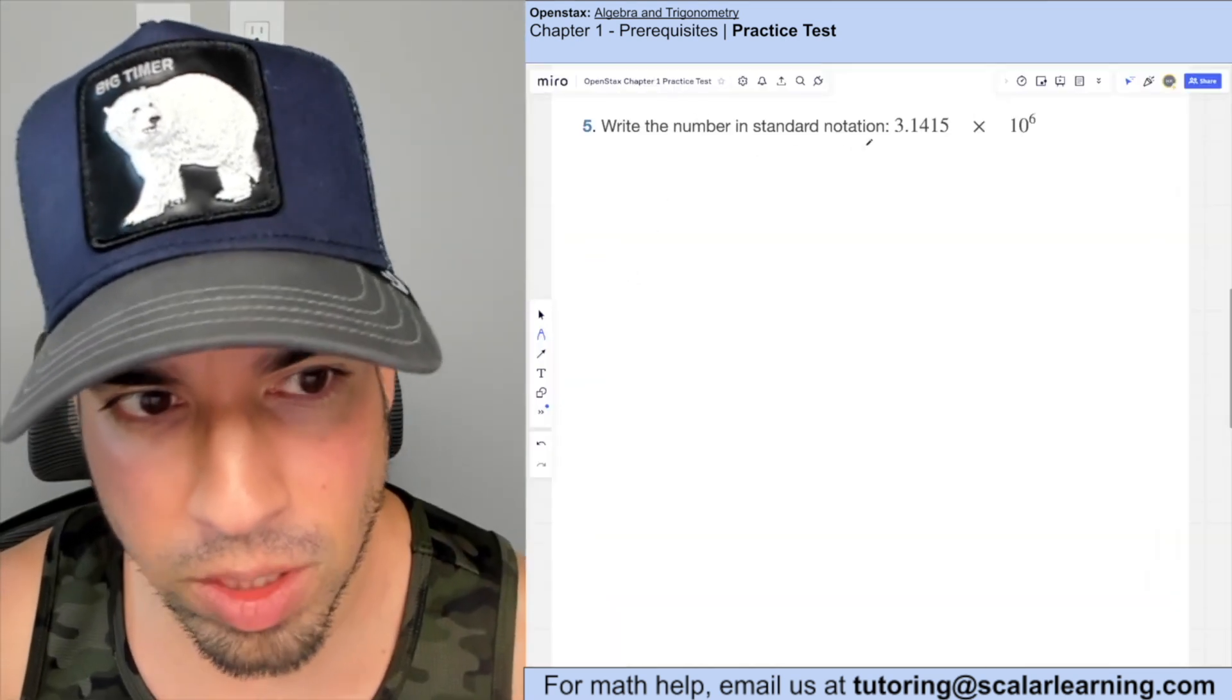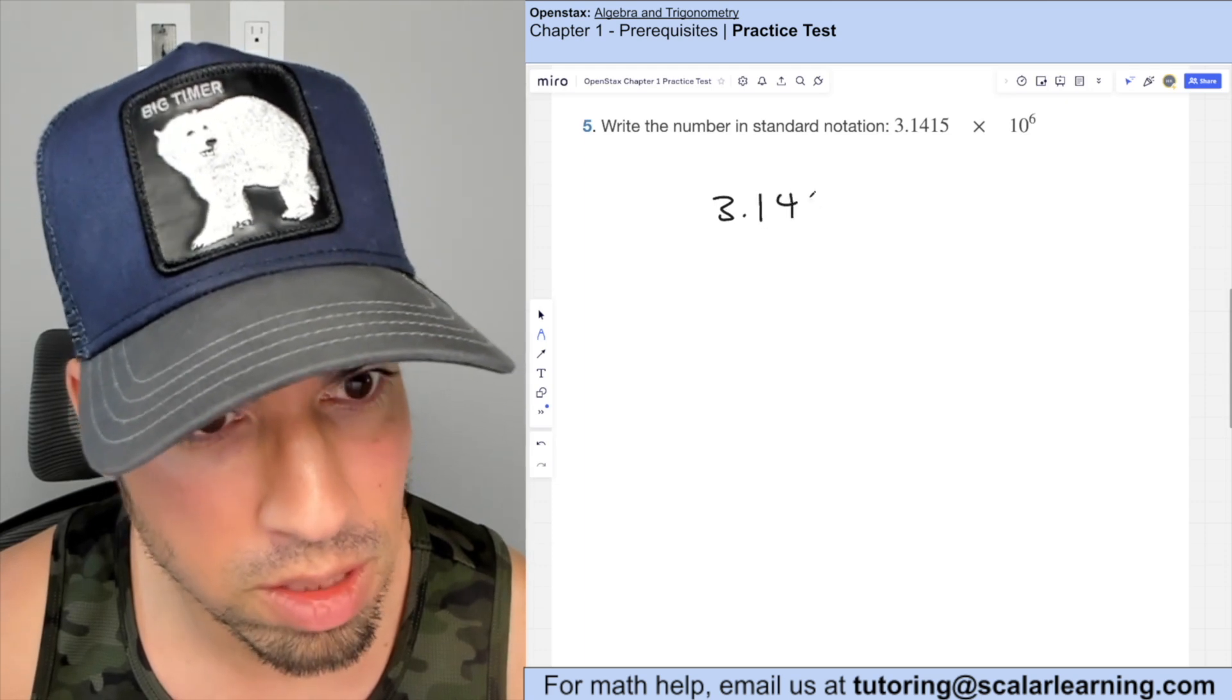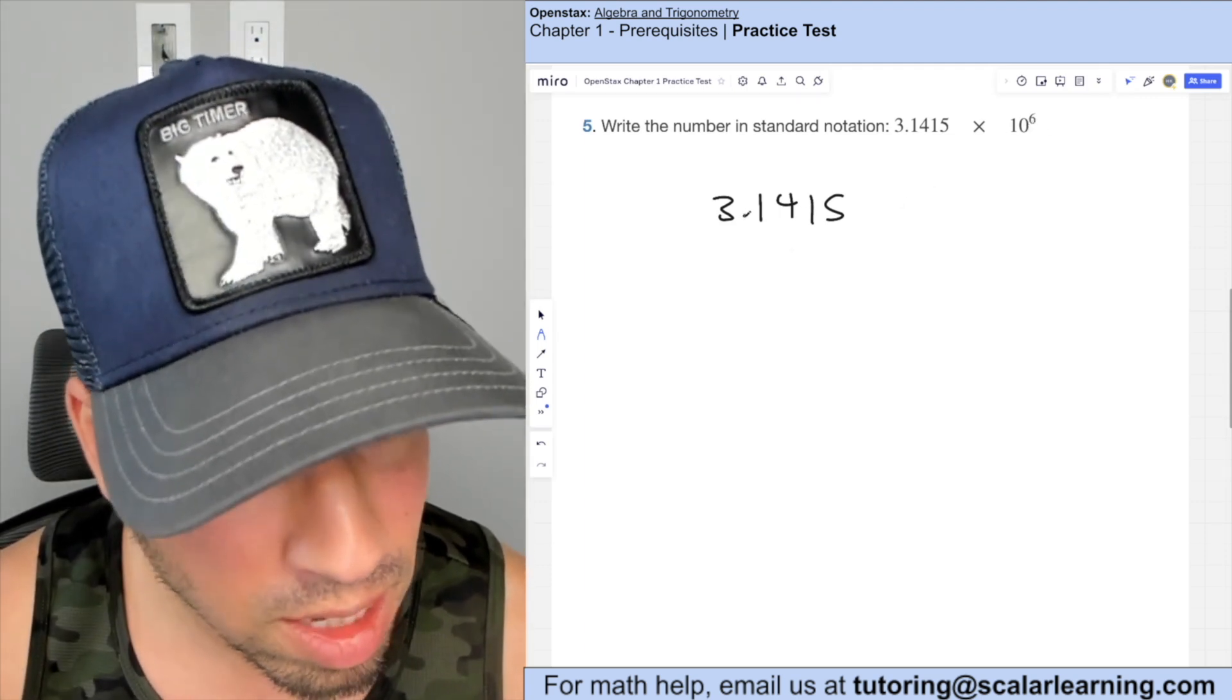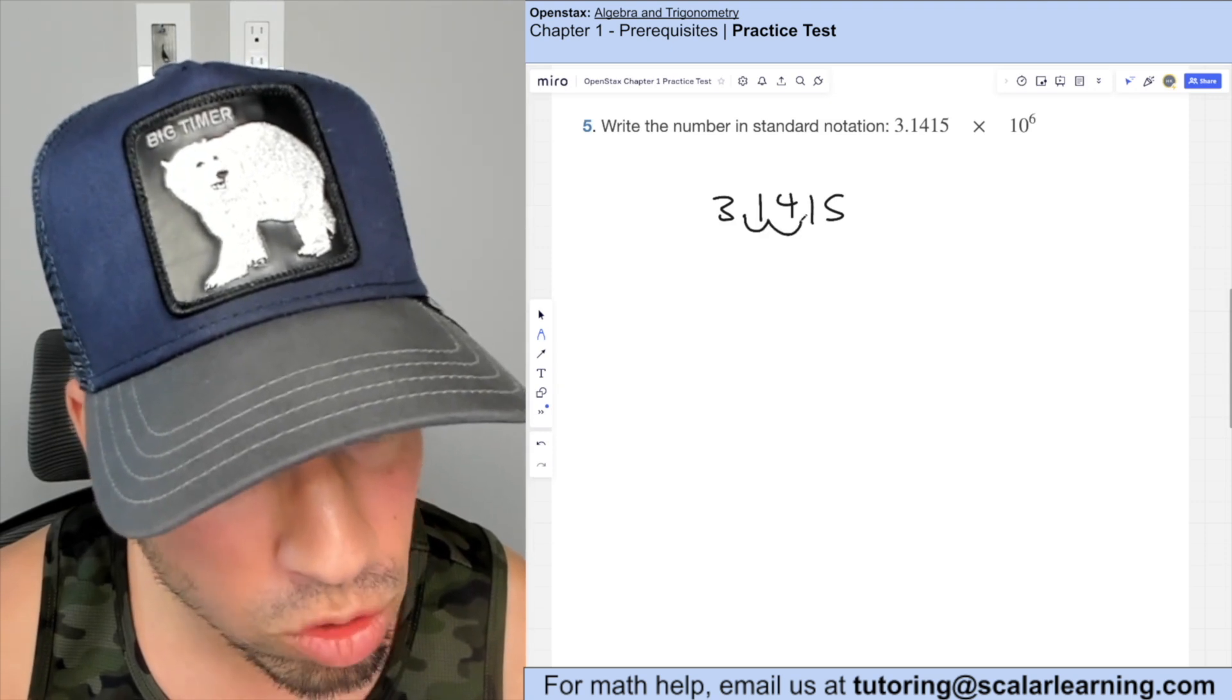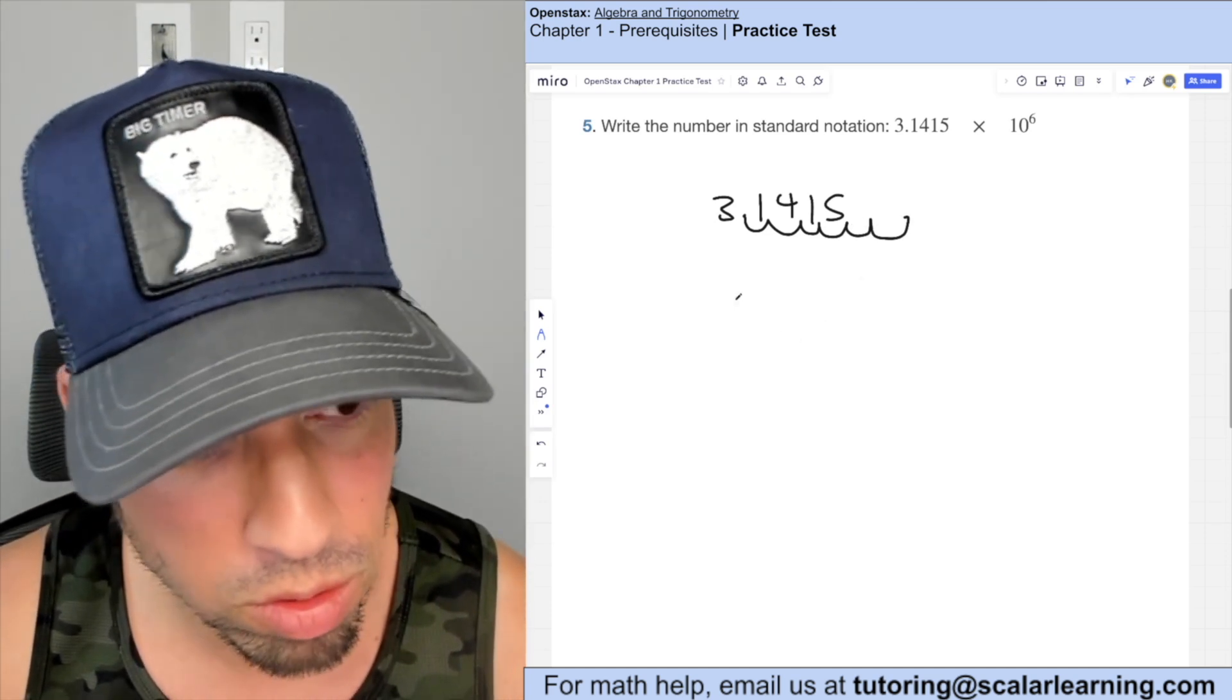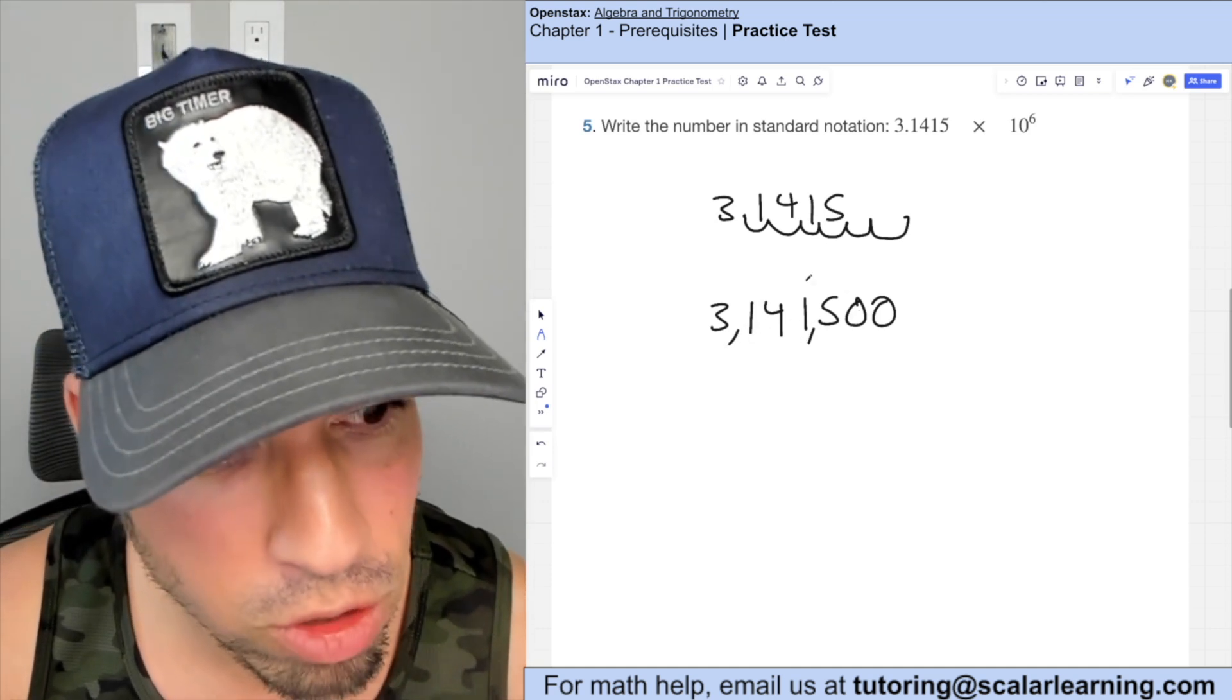This is currently in scientific notation. We want to put it in standard notation. So the process is as follows. So I've got 10 to the sixth power to put it back. This is a positive exponent. I take my decimal and I move it six spots to the right. So one, two, three, four, five, six, and these two empty spots gets filled with zeros. So my final answer is 3,141,500. Boom, done.